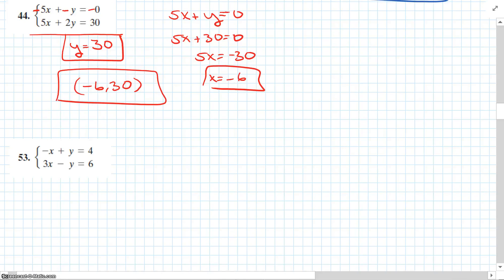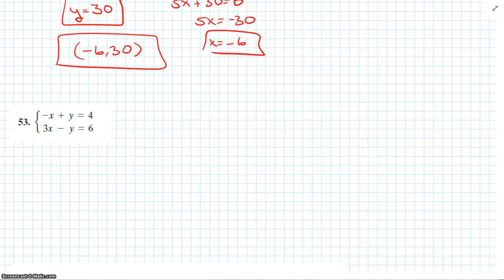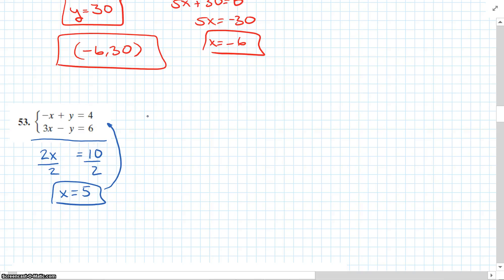Question 53. Solve each equation. It's set up, so we're just going to add these equations as is. So -x + 3x is 2x. The y's cancel. 4 + 6 is 10. So I've got 2x = 10. Divide each side by 2. We get x is equal to 5. I'm going to plug it back in to the first equation. So I get -5 or -x + y = 4. So add 5 to each side, and we get y = 9.